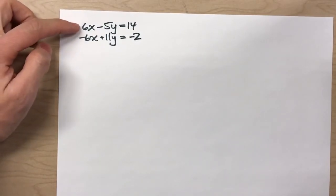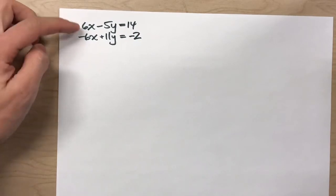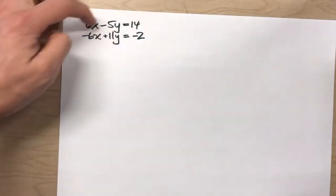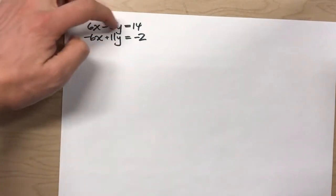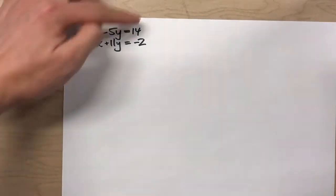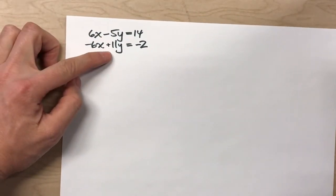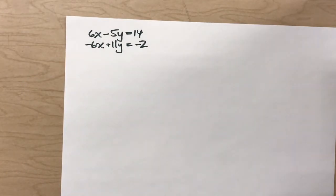So normally, we would have to take one of these equations, subtract, for example, subtract 6x on both sides, divide both sides by negative 5, so that we would get a y equals equation and substitute it into the other equation. But, I'm going to show you a new method that will solve this a lot faster.